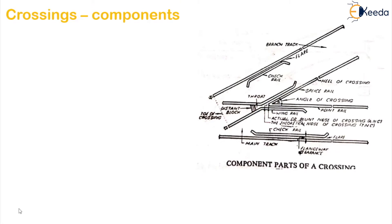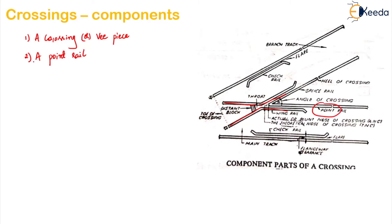There are various crossing components. If you want to list them one by one: the first one is a crossing, also called as V piece. The second one is a point rail — if you observe here, this is your point rail. Then the third one is a splice rail — if you observe, this is your splice rail. The fourth one is two wing rails — here if you observe, this one is one wing rail and this one is the other wing rail.